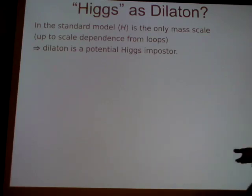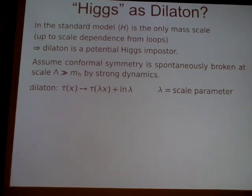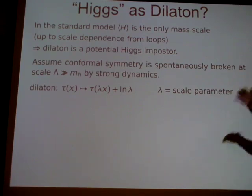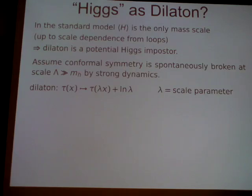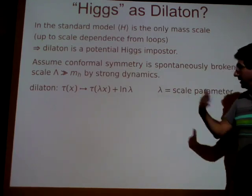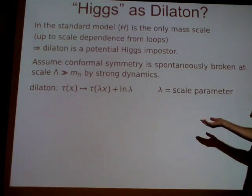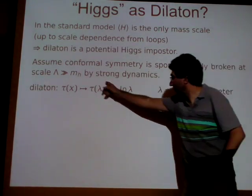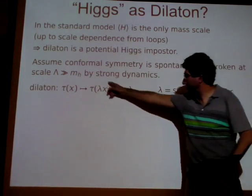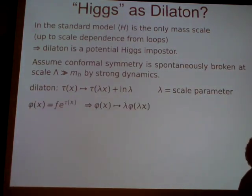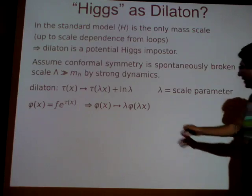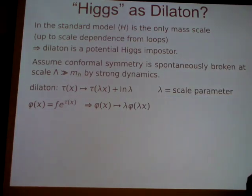Maybe the observed state that we see is like that. The sort of setup we imagine is that conformal symmetry is spontaneously broken at some high scale — maybe a TeV scale — by some strong dynamics. That generates a Nambu-Goldstone boson, a dilaton, with some shift symmetry, and also the coordinates scale — that's the sign that scale invariance is being broken. If we have that, we can combine it into a scalar.